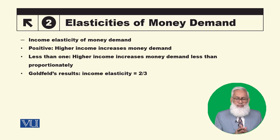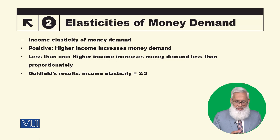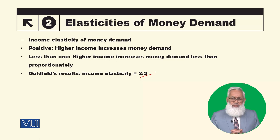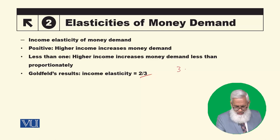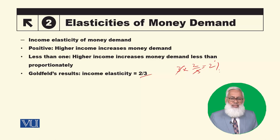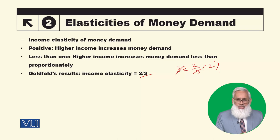Income elasticity of money demand means: if income increases by 1%, by how much does money demand increase? We already knew the relationship is positive — as income rises, money demand rises. And secondly, it is less than 1, meaning if income increases by 1%, money demand increases by less than 1%. Studies show that the income elasticity of money demand is 2/3. This means if income increases by 3%, money demand increases by 2%.